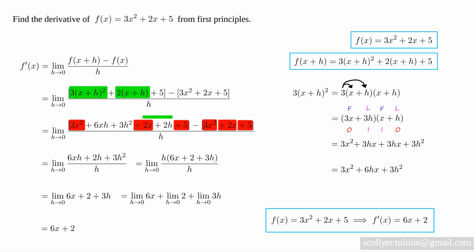And so we have that if f(x) = 3x² + 2x + 5, then f'(x) = 6x + 2.